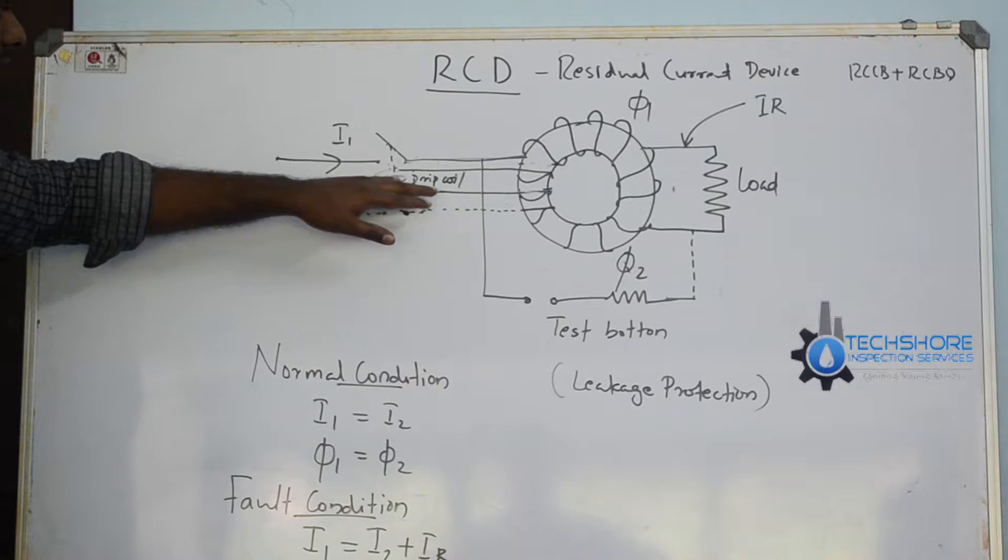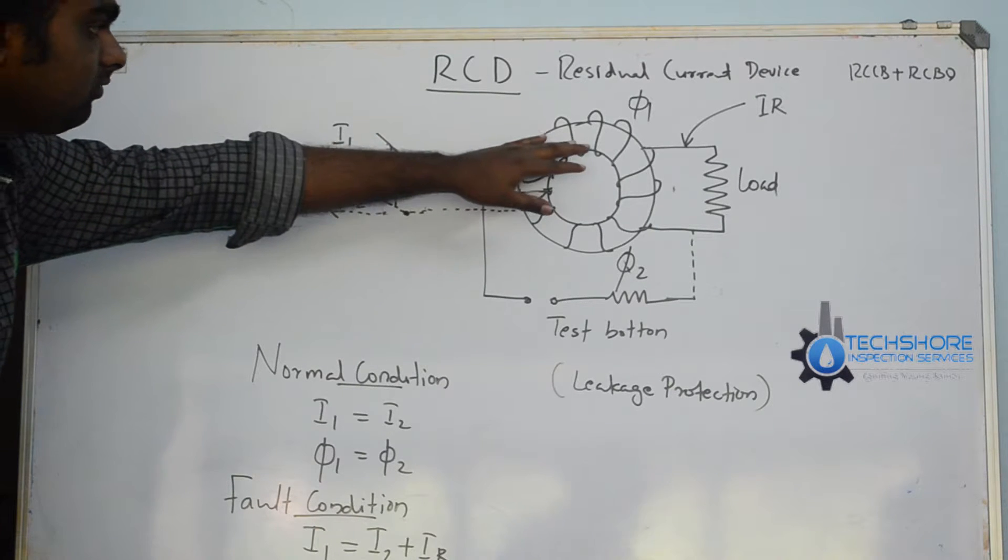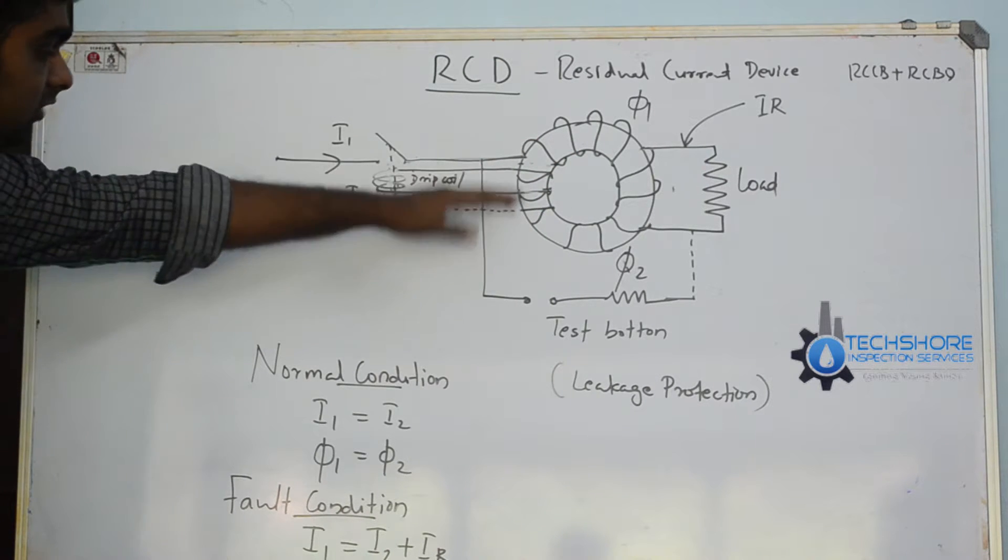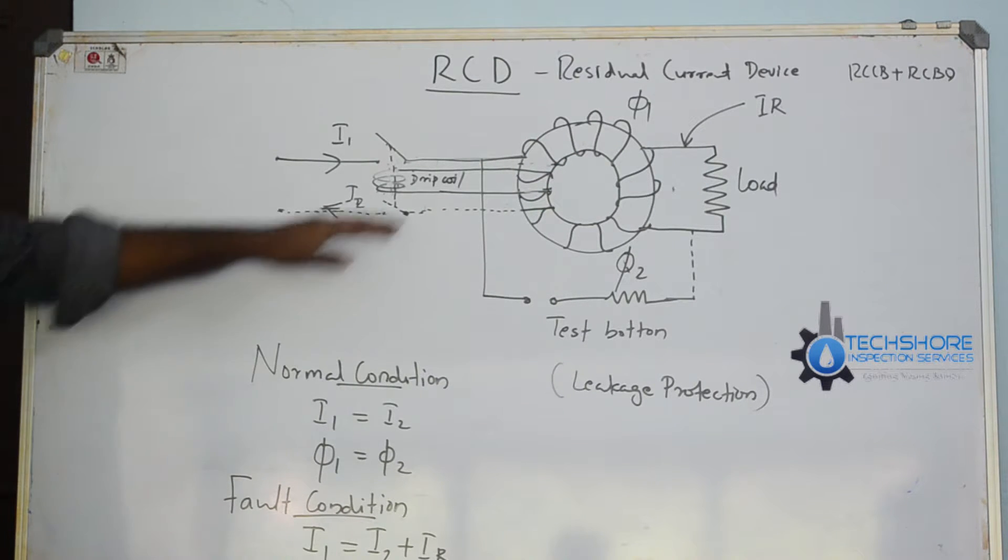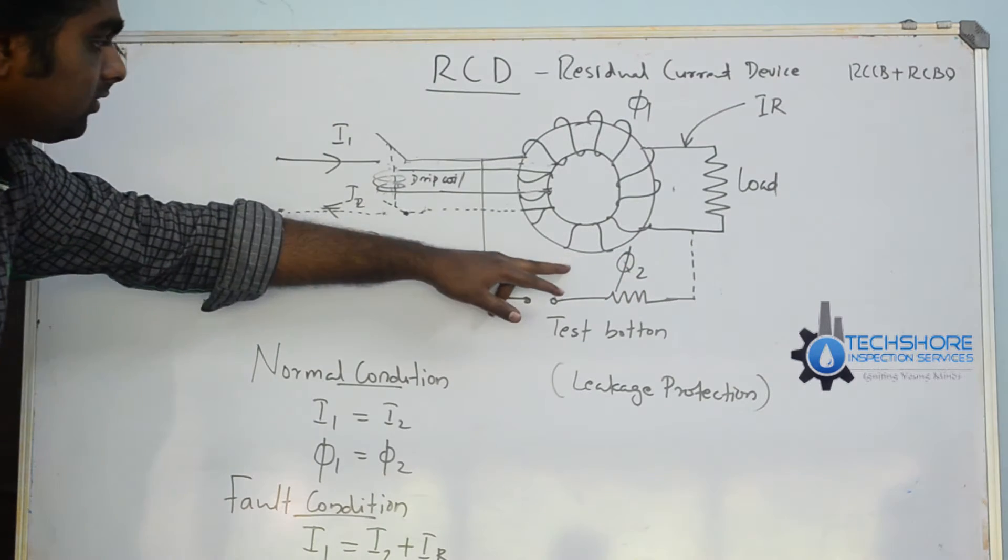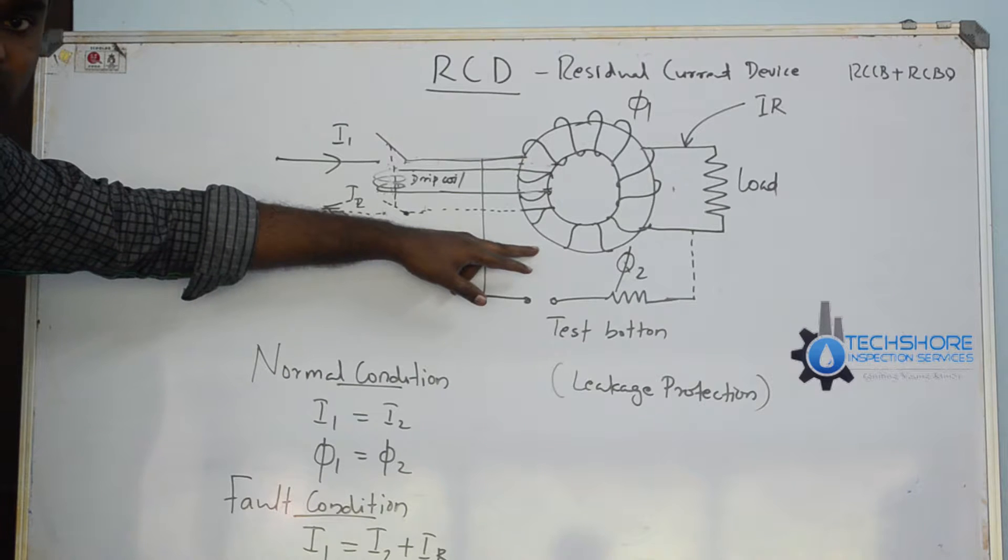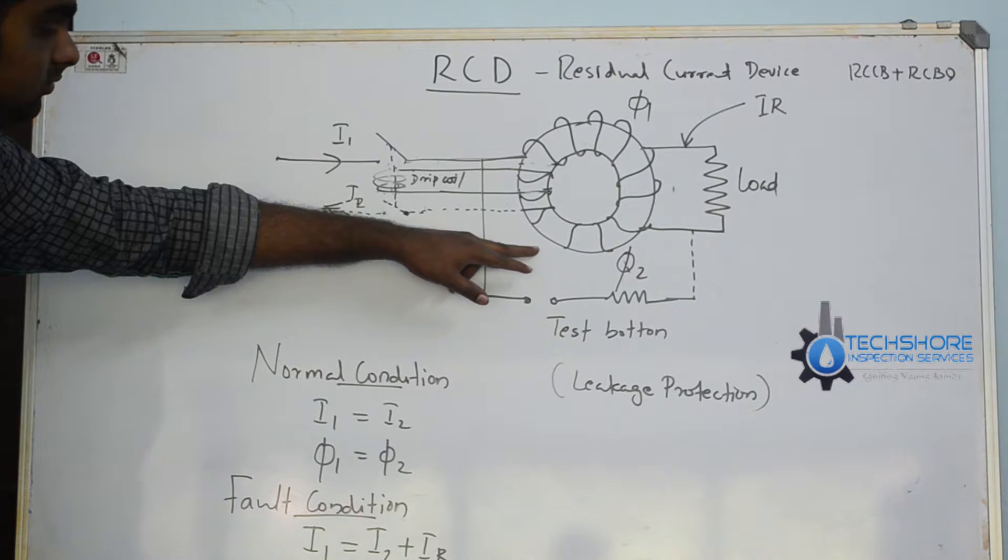This is the I1 current passing through the coil. This is the first phase. It is created by phi1. This is the normal condition. In normal condition there is a load. Then the current I2 is passing through it and phi2 is the flux.